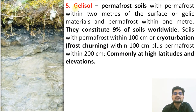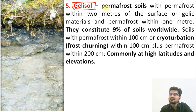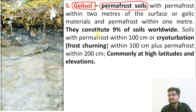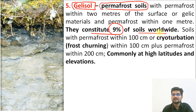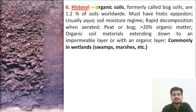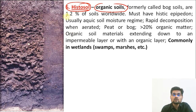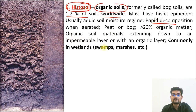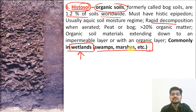The fifth order is Gelisol. The word 'jelly' suggests a semi-state between liquid and frozen. These are permafrost soils where freezing and thawing occur and they constitute about 9% of soils worldwide. The sixth order is Histosol — organic soils. They have a rapid rate of decomposition and are commonly found in wetlands, so Histosols are also called wetland soils or soils of swamps and marshes. They constitute about 1.2% of soils worldwide.